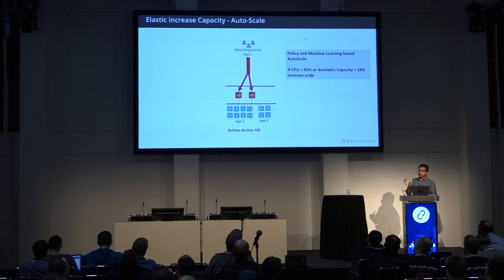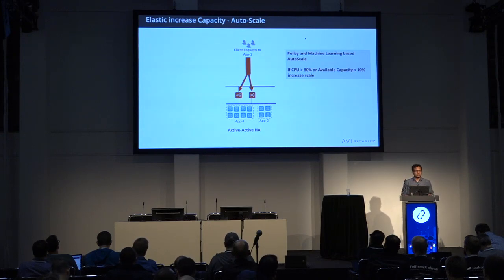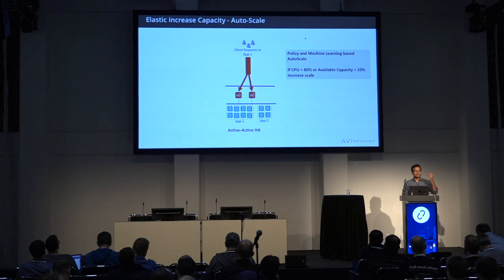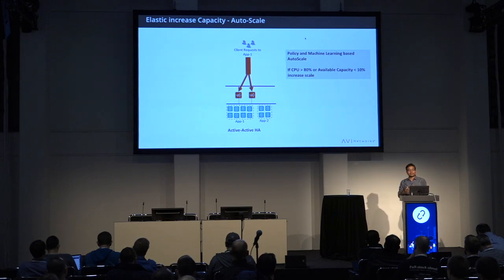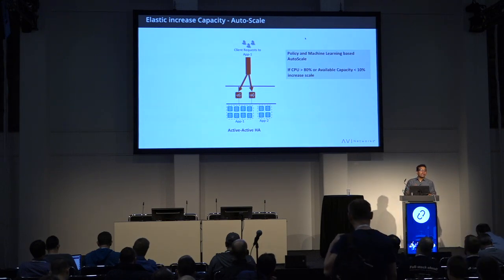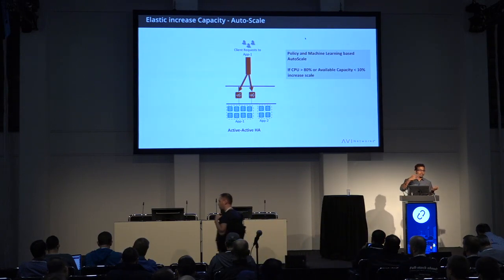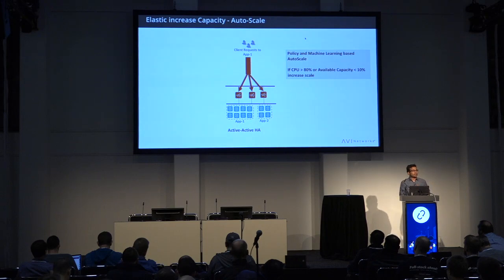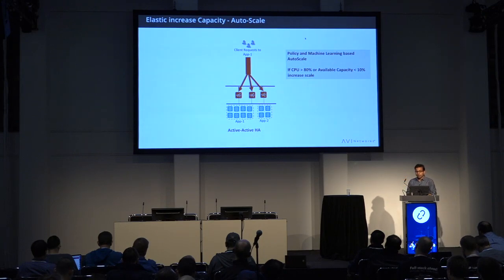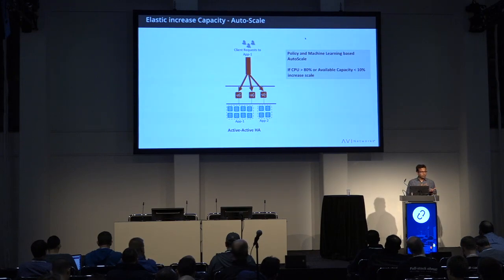Regarding elasticity: as traffic increases, the control plane monitors how well each service VM is doing and how much traffic it is handling. You can do auto-scaling or policy-based elastic scaling — for example, when CPU load goes above a certain percentage or app response times exceed certain latencies, the system increases the number of instances and spreads the traffic across them. This elasticity is one of the big powerful things the service engine VM architecture brings that you cannot get with single-instance deployments.